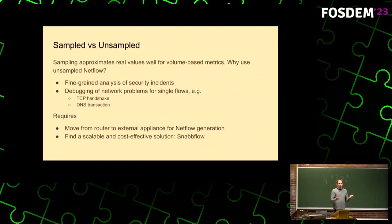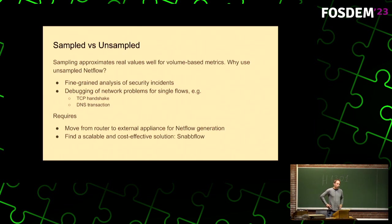So why would you even want to do unsampled NetFlow? There are a couple of use cases that are really useful. In terms of security, sampling is fine for detecting volumetric DDoS — you basically have a constant packet rate and if you look at every nth packet it's easy to scale this up. But if you want to detect a bot in your network, then it's more difficult.